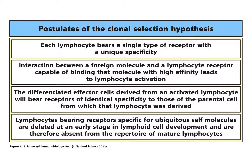Each lymphocyte initially bears a single type of receptor with a unique specificity. As they are traced through the bloodstream, they interact with different foreign molecules and different receptors — some will live, some will not. Those that do not survive are dying via apoptosis, a type of cell suicide, because their receptor happened to recognize some self antigen.